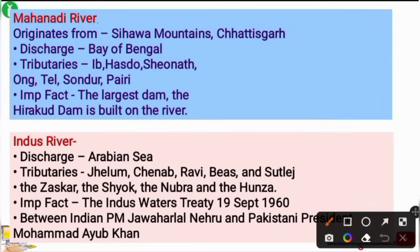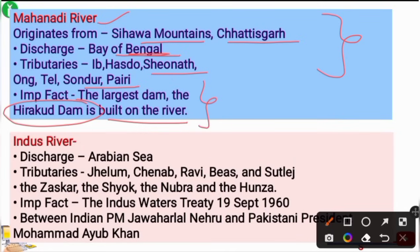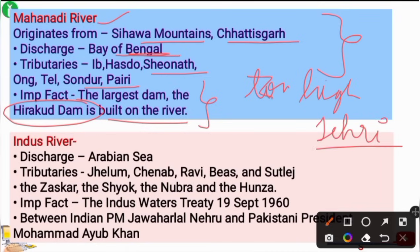The Mahanadi River originates from the Sihawa Mountains in Chhattisgarh and discharges into the Bay of Bengal. Its important tributaries are Ib, Hasdo, Sheonath, Ong, Tel, Sondur, and Pairi. The largest dam in India, the Hirakud Dam, is built on the Mahanadi River in Odisha. The highest dam in India is the Tehri Dam, which is built on a tributary of the Ganga River.